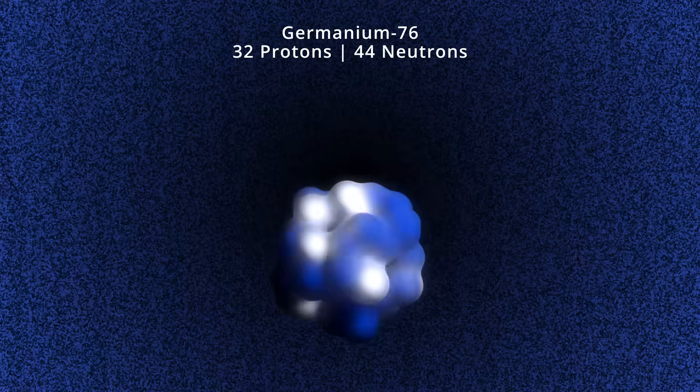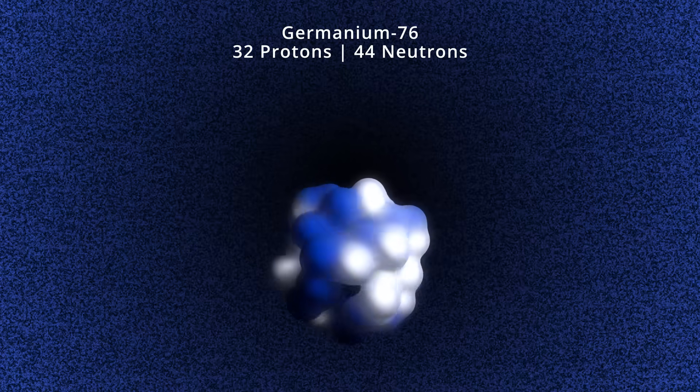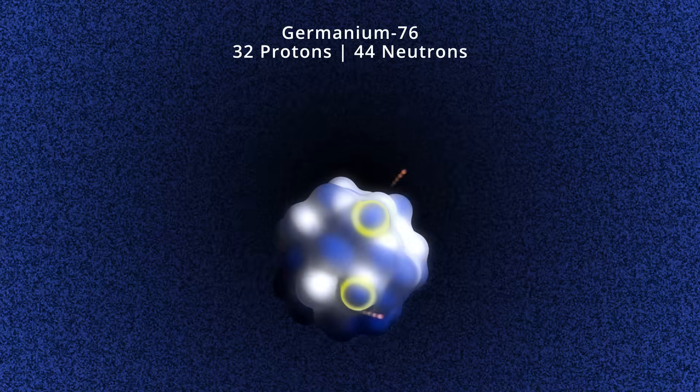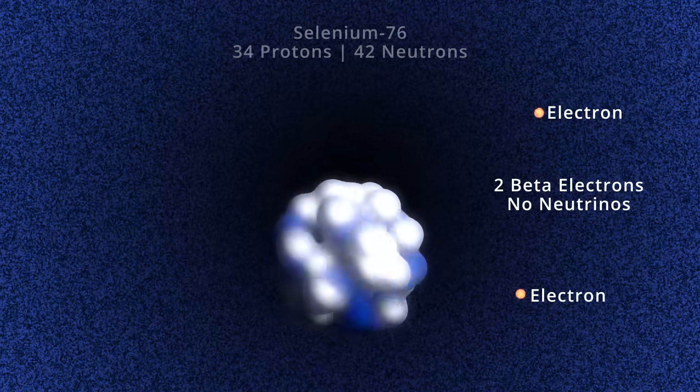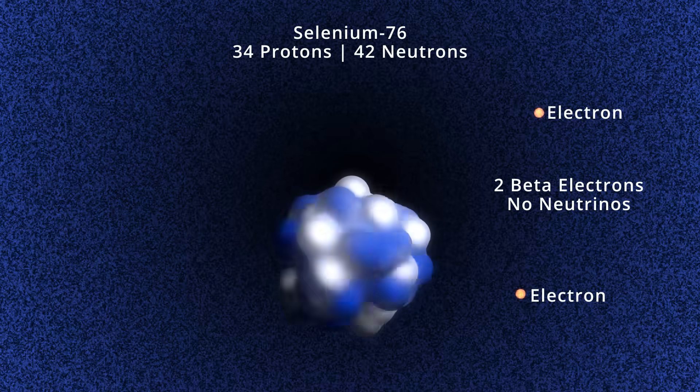However, if the neutrinos have a non-zero mass, there's a tiny possibility for a different helical direction, and then this neutrino can be reabsorbed in a double beta decay process.